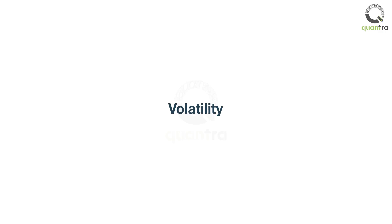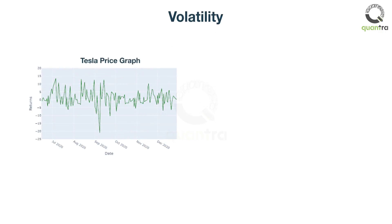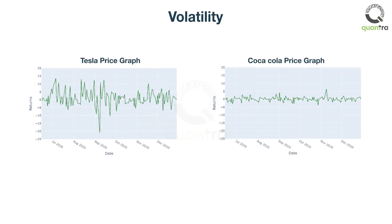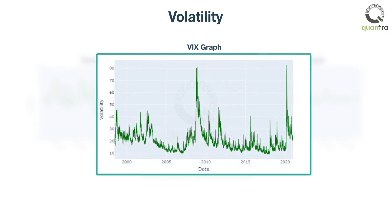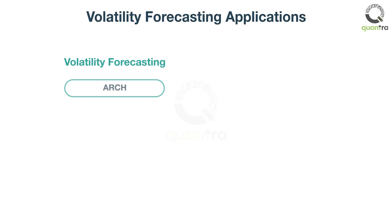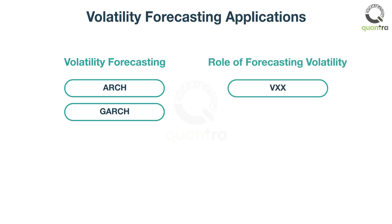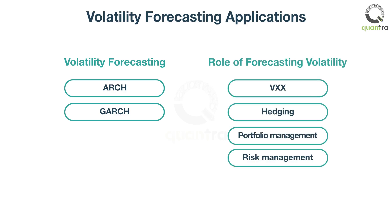Yes, volatility can also be used. Tesla has large price changes on a day-to-day basis — compared to Coca-Cola, which is stable, Tesla's price can increase or decrease as much as 15%. This is why Tesla is said to have high volatility. You can use time series to analyze the volatility index created by the Chicago Board Options Exchange, using models like ARCH and GARCH. This will give you an edge when trading VXX, and volatility forecasting models also play a role in other aspects shown on screen.